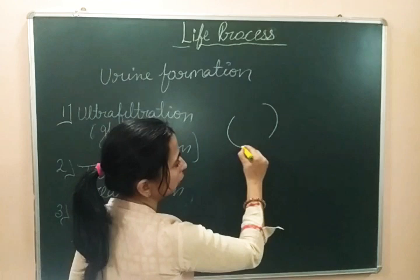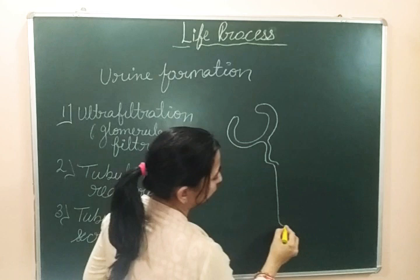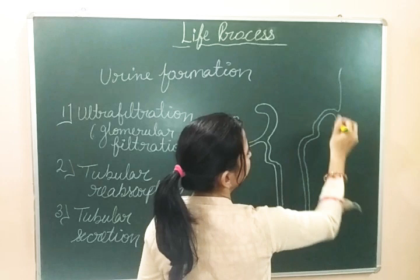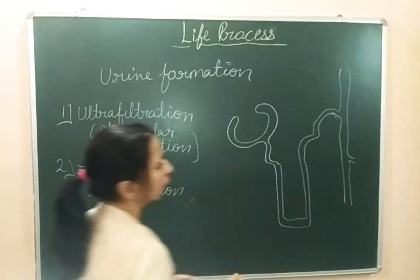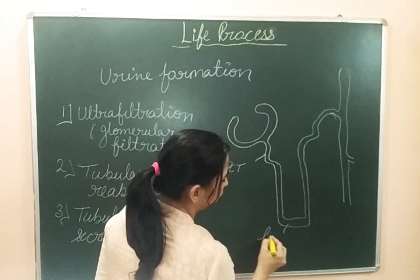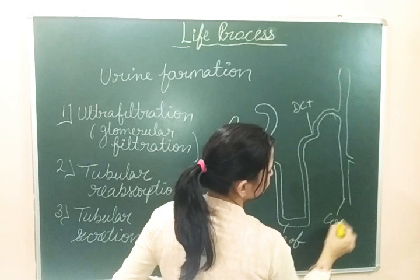In the case of the nephron, it has a cup-shaped structure known as Bowman's capsule. Inside the Bowman's capsule there is a tuft of capillaries known as the glomerulus. Then it has the PCT — proximal convoluted tubule — then the distal convoluted tubule, and the last part is the collecting duct. These are the important parts of the nephron. This is the simplest diagram of the nephron. This part is the PCT, and this is the loop of Henle.